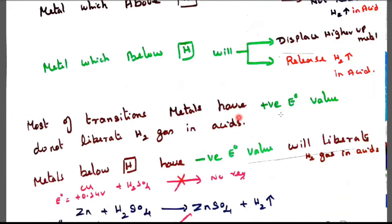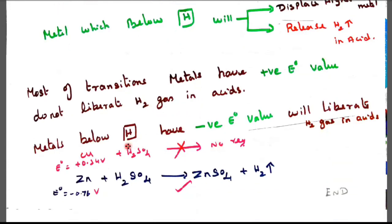Most of the transition metals have positive E⁰ value, do not liberate hydrogen gas in the acid. For example, E⁰ value for copper plus 0.34 voltage. So with sulfuric acid there is no reaction at all.